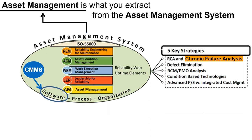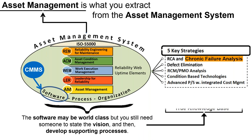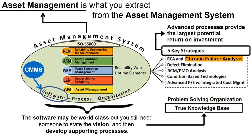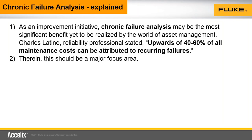My interpretation breaks this into five key strategies. But the topic of interest today is chronic failure analysis — that's really the subtopic of this book. Wouldn't it be great if you could design your CMMS to extract value and improve asset reliability? Advanced processes provide the largest potential return on investment, and chronic failure analysis is at the top of that list. It may be the most significant benefit yet to be realized by the world of asset management.